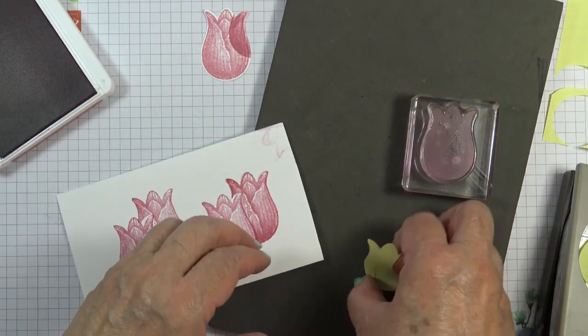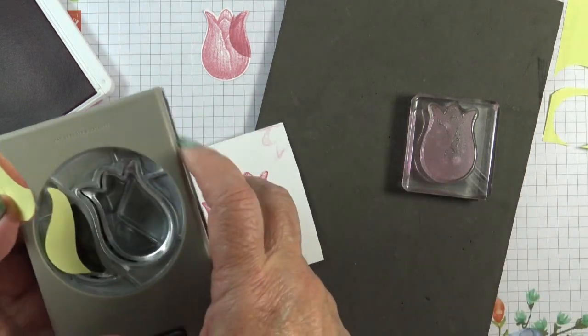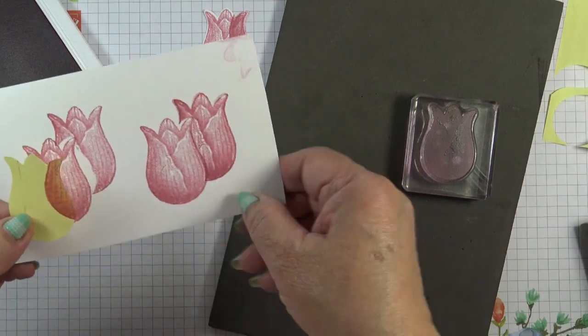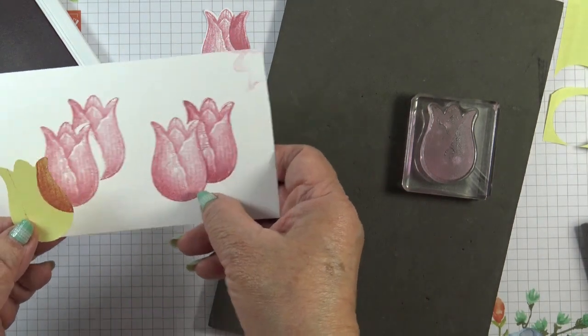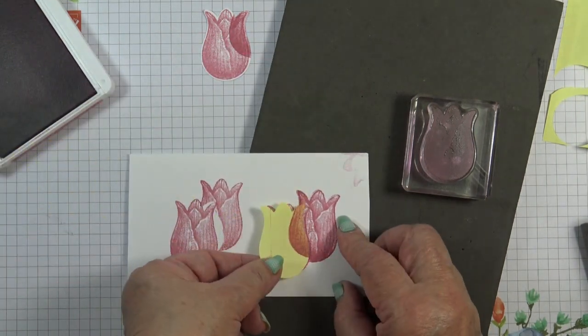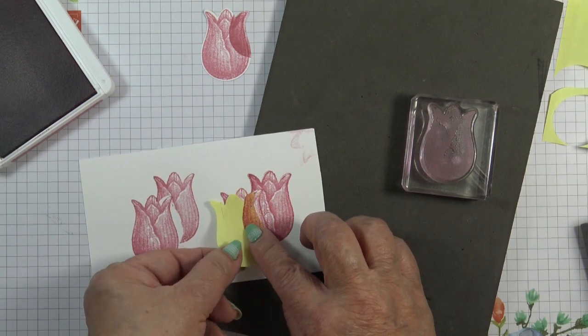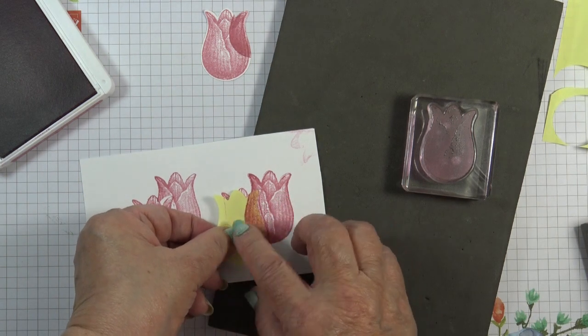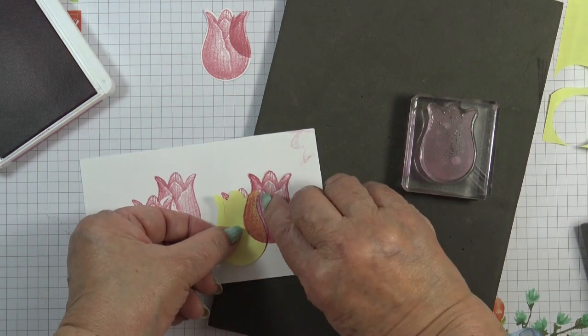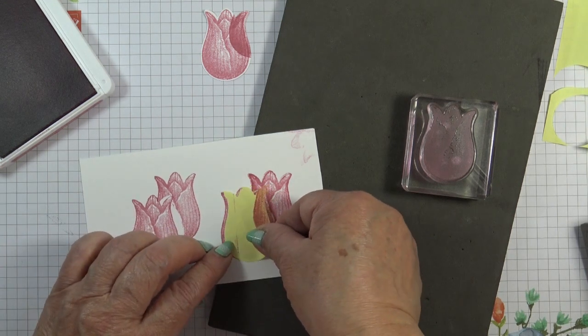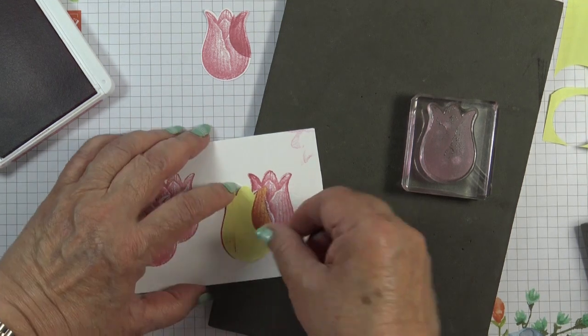So if you have a punch that you can punch out the image with and you want to stamp behind the tulip, then you need to remember to just scooch your post-it note punched out tulip a little to the left of the image or to the right of the image. Let's do this side as well.